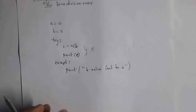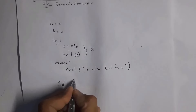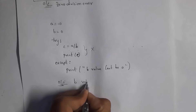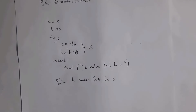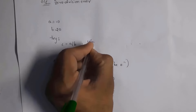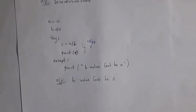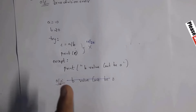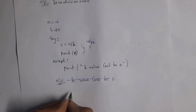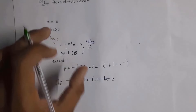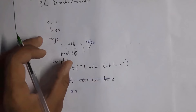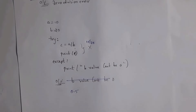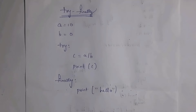Since a = 10 and b = 0, we cannot divide by 0, so the try block is skipped and the except block executes — giving the output 'b value can\'t be 0'. But if I change b to 20, then 10 / 20 = 0.5, so there is no exception in the try block and the code inside the try block executes, giving output 0.5. So only if an exception occurs inside the try block will it skip to the except block; otherwise the try block executes normally.